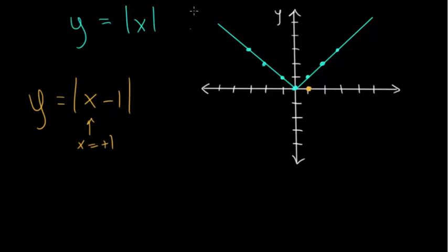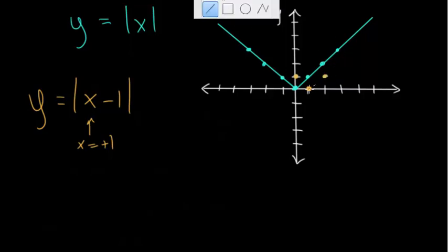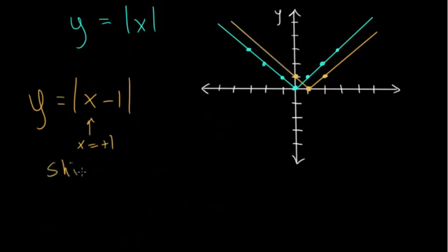This is the opposite of what you'd expect compared to shifting up or down, which is straightforward — if you add, you go up; if you subtract, you go down. If you plug in two, you get one. If you plug in zero, you get the absolute value of negative one, which is one. So this orange line is the same exact shape, just shifted to the right by one.